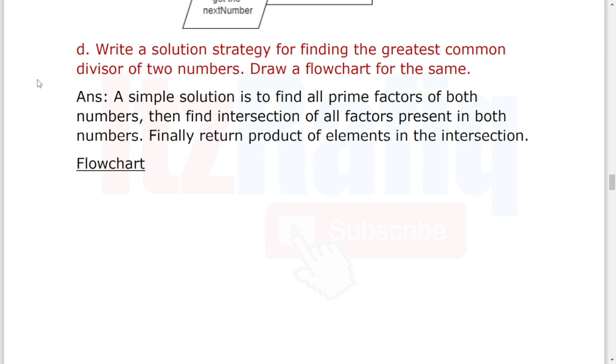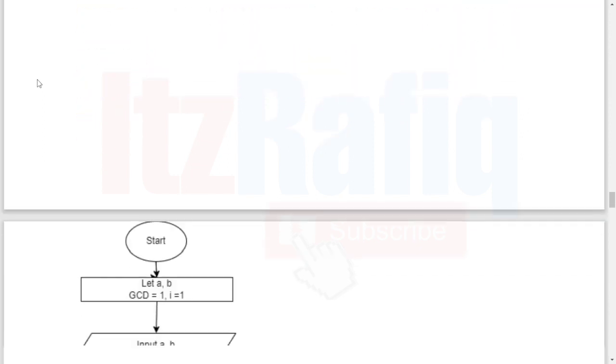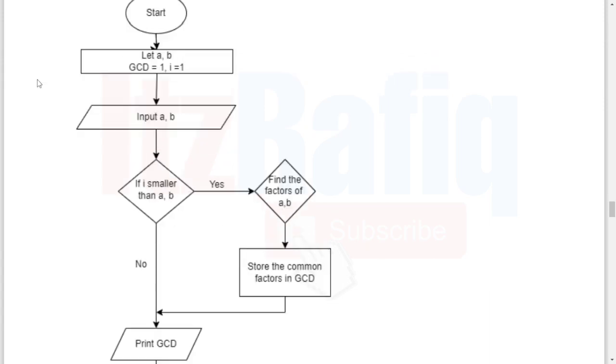The solution strategy will be: first, we'll find the prime factors of both numbers, then intersect the common factors and return the product of the elements. The flowchart will be this way: Start, let a, b, and gcd equal 1, i equal 1. Then we'll take the input of a, b from the user. Then we'll check whether i is smaller than a or b. You can see from the screen. The program will stop after printing gcd.